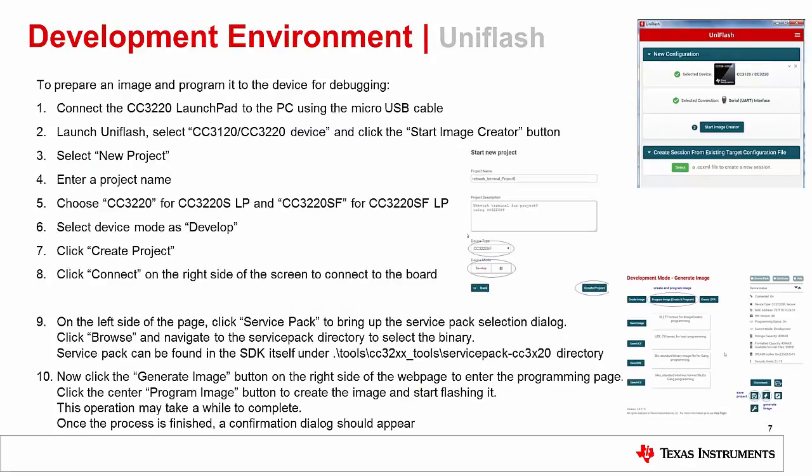Now we will create a new project, update the service pack, and program it to the launchpad. Connect the launchpad to the PC using the micro USB cable. Launch UniFlash, then select the CC3120-CC3220 device and click the Start Image Creator button. Select New Project and enter a project name. Choose CC3220 for the CC3220-S launchpad and CC3220-SF for the SF launchpad. Select device mode as Development when working from the debugger. Production mode locks the device from debugging. In development mode, you can also flash the application as part of the image and execute it.